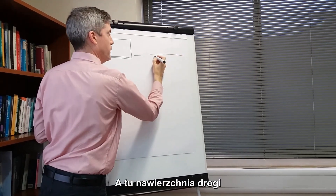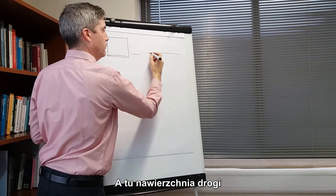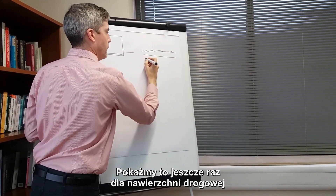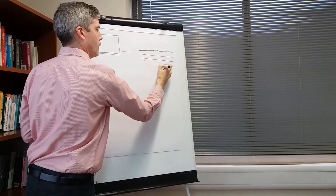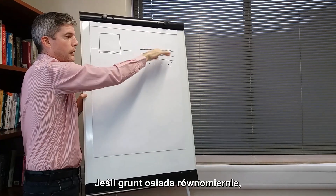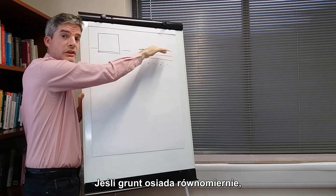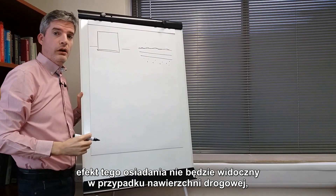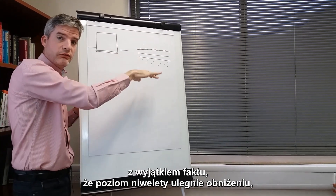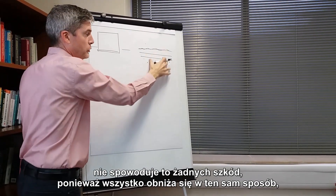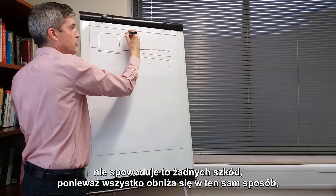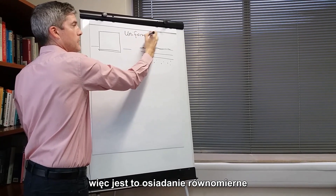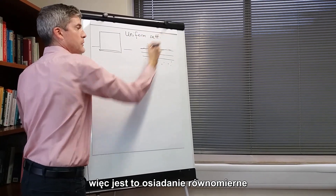And a highway pavement — if the soil settled uniformly, there'll be no sign of that settlement on the highway pavement except for the fact that the level has dropped. It will not cause any damage because everything is moving down the same. So that is uniform settlement.